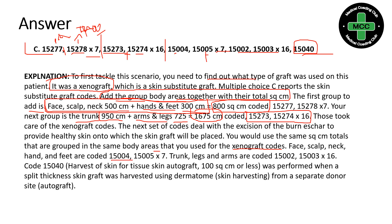Lastly, 15040 is for harvest of skin tissue for autograft — 100 square centimeters or less. For the harvesting we are coding 15040, as the initial scenario specified they are harvesting skin for graft purposes. So the total answer for this scenario is C. This is a very important case study that has been repeated many times. Please go back and read the complete description of all these codes to get better clarity.